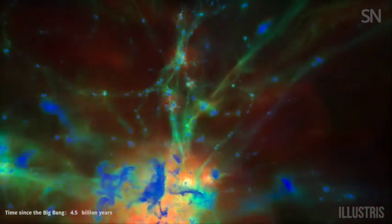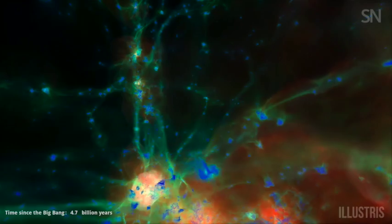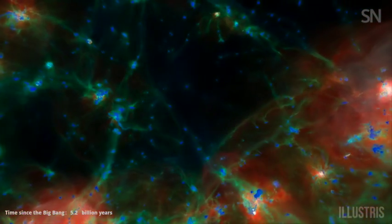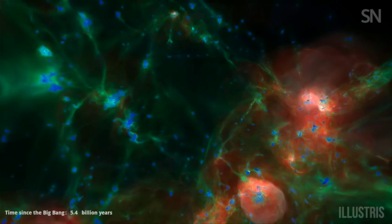Cooler gases are blue, where stars form. Green gas is warmer, while red and white gases are extremely hot and surround the most violently active galaxies.